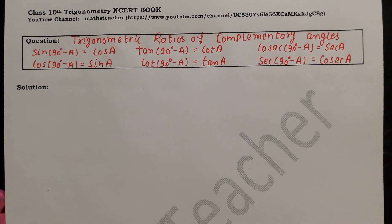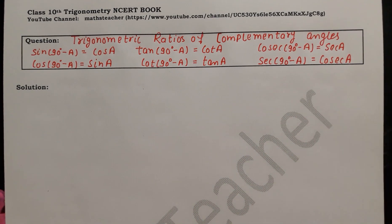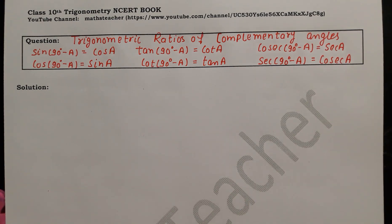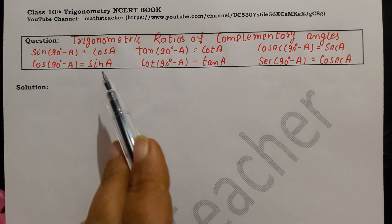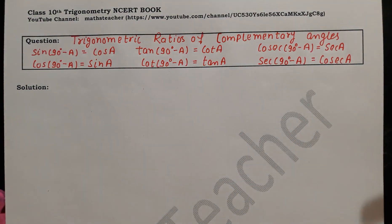Hello Viewers! In today's video, I will tell you the Trigonometric Ratio of Complementary Angles. First, what are complementary angles? Angles whose sum is 90 degrees — we call those complementary angles. So here, we have to write the Trigonometric Ratio of Complementary Angles.